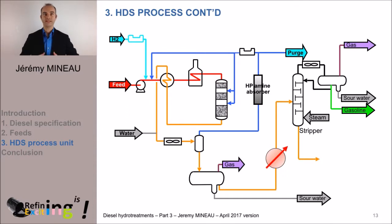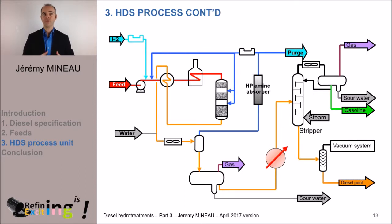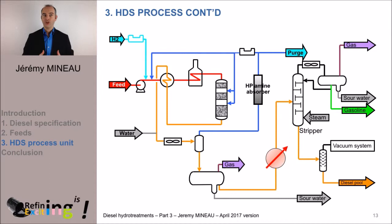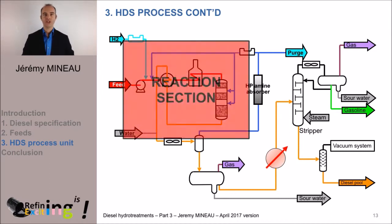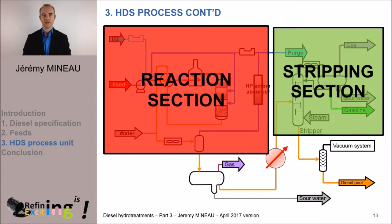The ultimate stage is to dry this product using a dryer. The typical type of dryer considered is a vacuum dryer. The vacuum is created by steam ejectors. We decrease the pressure down to 100 millibars, and at this pressure we succeed in vaporizing water. The HTS process thus consists of a reaction zone, a stripping section, and a dryer.